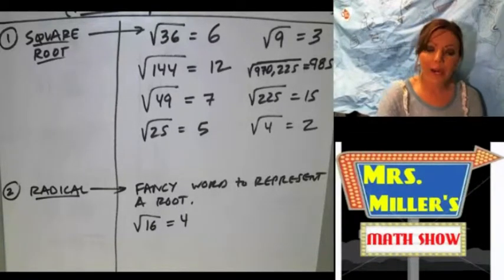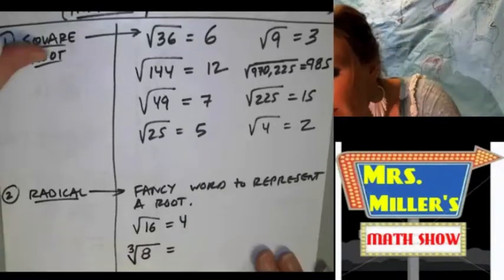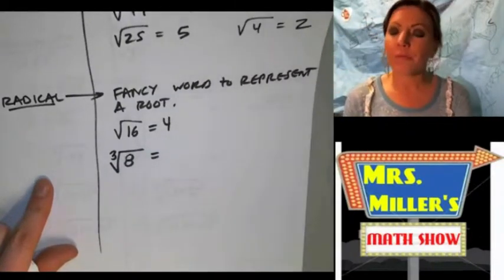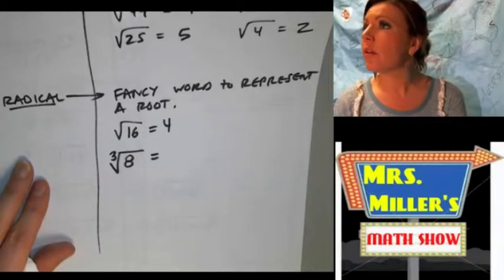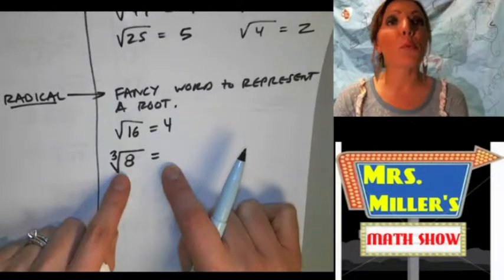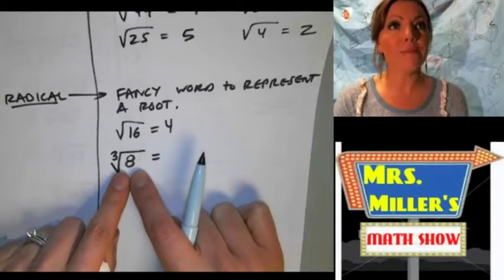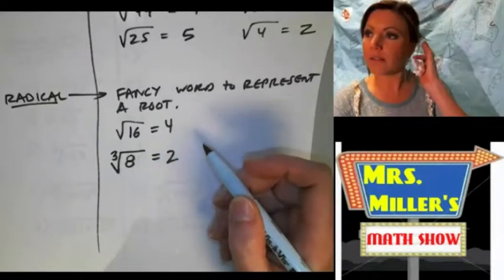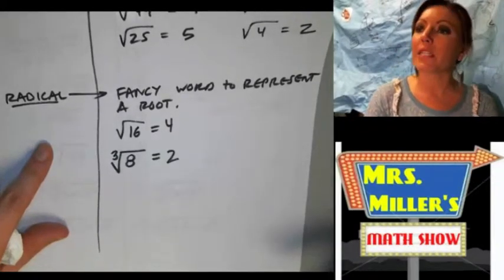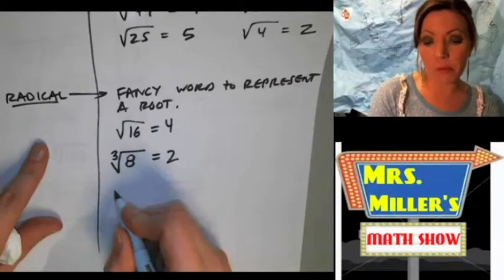If a square root is something that you multiply by itself twice, what do we think a cube root is? There's a three in the root sign and then eight. Tyler: a number you multiply by itself three times. Yep, a number you multiply by itself three times to get that number. So can anybody think of a number that you multiply by itself three times to get eight? Michelle: two. We know it's two because two times two times two is eight. Can anybody think of another perfect cubic root? Zach: one. Cubic root of one is one.